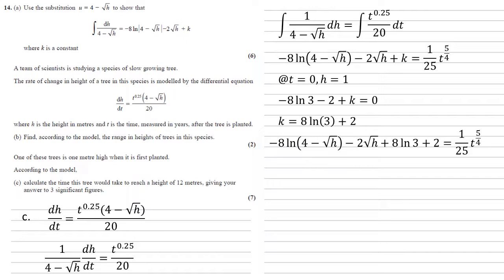So replacing our k with that, we've now got minus 8 log natural 4 minus root h minus 2 root h plus 8 log natural 3 plus 2 is equal to 1 over 25 times t to the 5 over 4. We want to work out the amount of time that's going to take the tree to reach a height of 12 metres. So we're going to substitute h equals 12 in. Simplifying that left-hand side and sticking it into the calculator gives us 8.85.